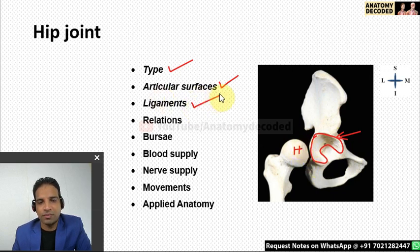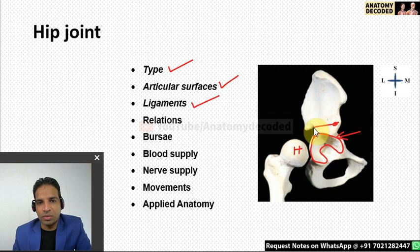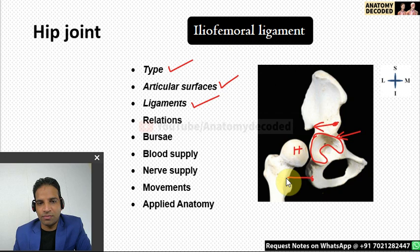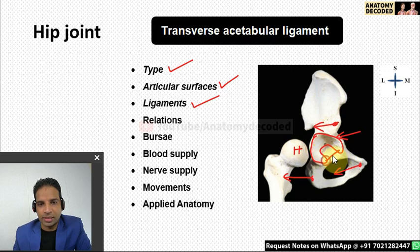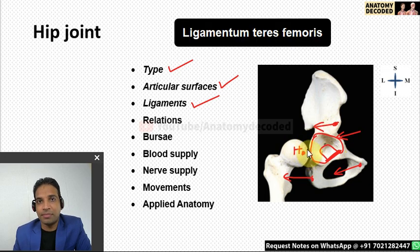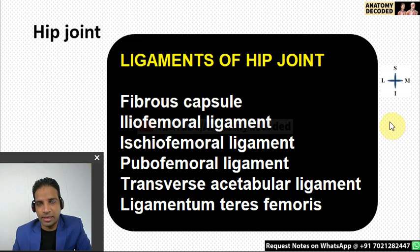Since the hip joint is a synovial joint, it has a fibrous capsule — the capsular ligament. From the hip bone, there are three ligaments: iliofemoral ligament (ilium to femur), ischiofemoral ligament (ischium to femur), and pubofemoral ligament (pubis to femur). There is also a transverse acetabular ligament and the ligament of the head of the femur — ligamentum teres femoris.